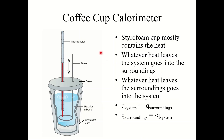Let's briefly talk about a coffee cup calorimeter. It's a really basic form of a calorimeter that uses a styrofoam cup, which mostly contains the heat. Whatever heat leaves the system goes into the surroundings, and whatever heat leaves the surroundings goes into the system. We assume the coffee cup retains all the heat, so this is an isolated system. The surroundings represent the water or solution around the reaction. Because of this, we can say q-system equals negative q-surroundings, or q-surroundings equals negative q-system. The magnitude of those heat values should be the same — they should just have an opposite sign.